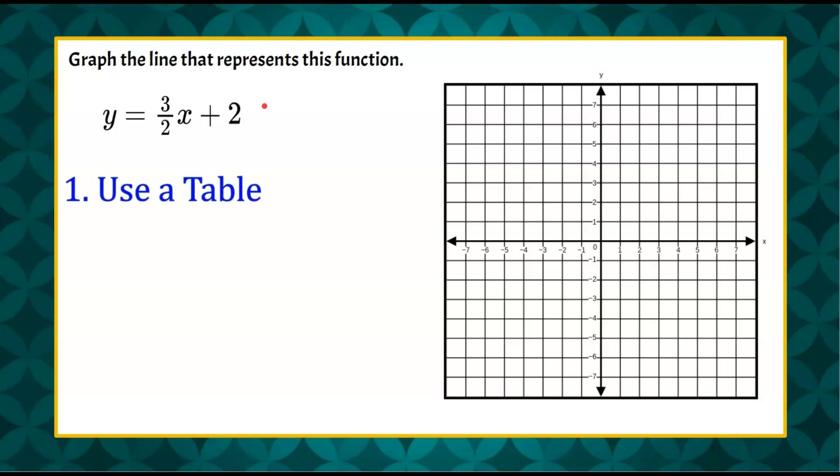So the first way I'm going to do it is I'm going to use a table. Typically I tell students we're going to set up a t-table, x and y. We're going to have our inputs and our outputs. So we input something for x, we evaluate, and we get a value for y, and then that creates an ordered pair.